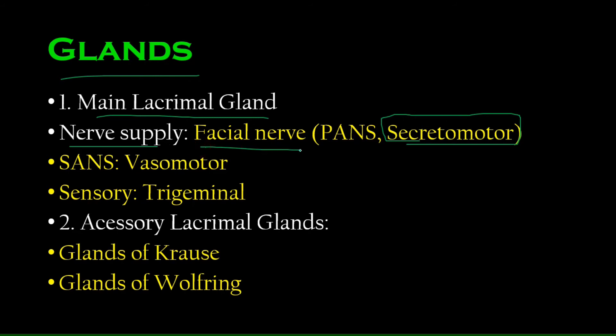This command is supplied by the facial nerve through the parasympathetic autonomic nervous system. Remember, whenever we talk of secretions, mostly it's the parasympathetic system which is active. The parasympathetic part of the facial nerve supplies the main lacrimal gland and causes lacrimation—its function is secretomotor. It also gets a sympathetic autonomic nervous system supply and that is vasomotor. It acts on the blood vessels inside the main lacrimal gland. Sensory supply to the main lacrimal gland is through branches of the trigeminal nerve.